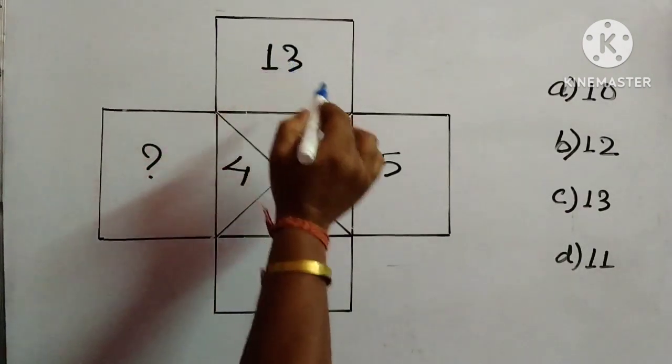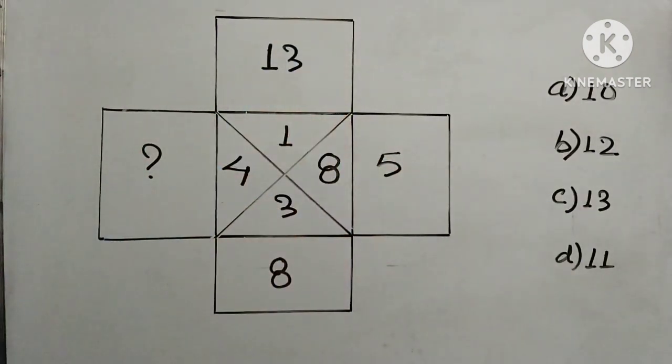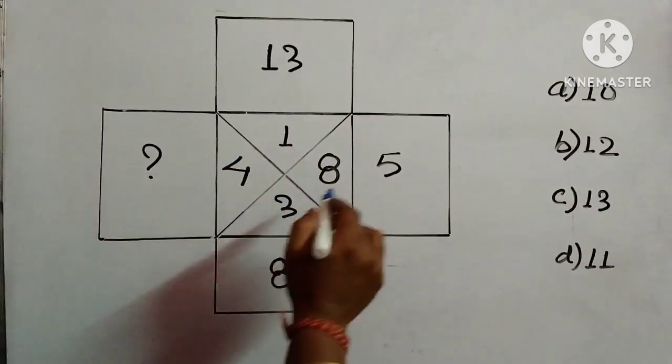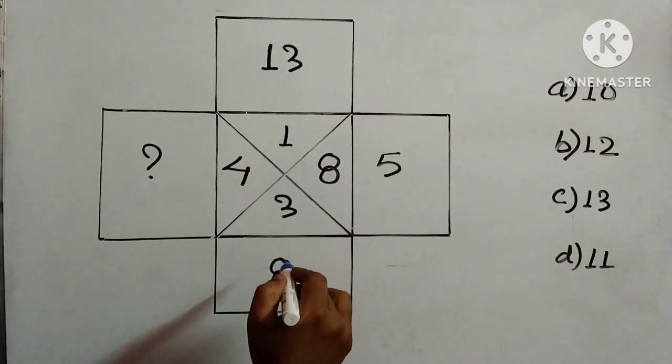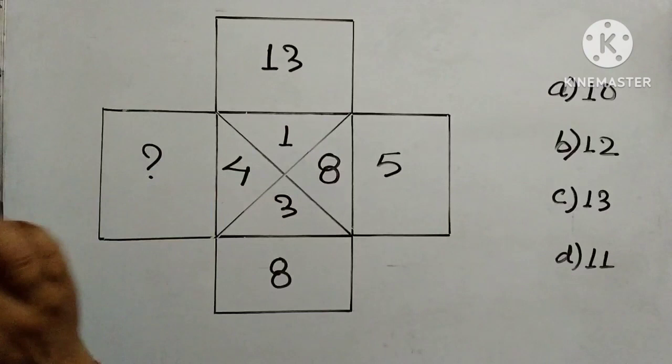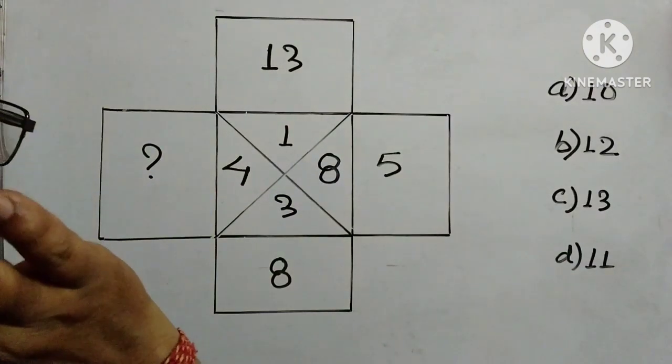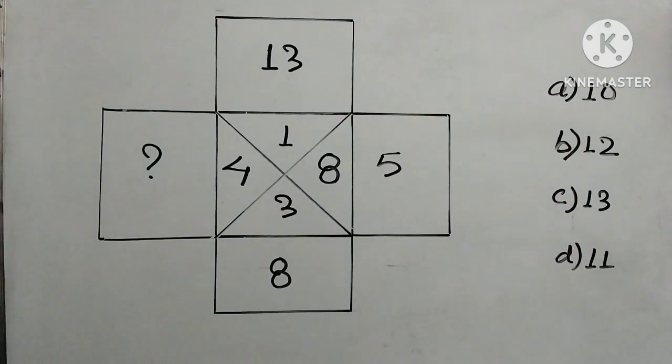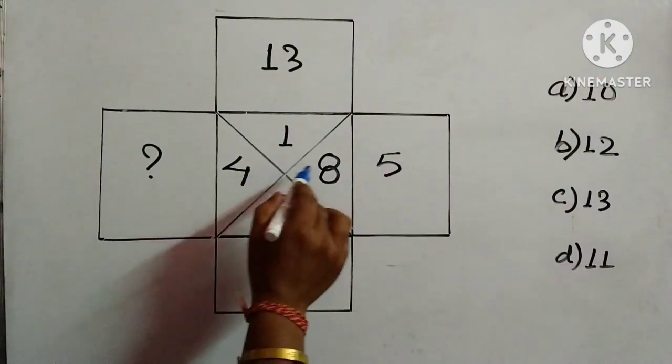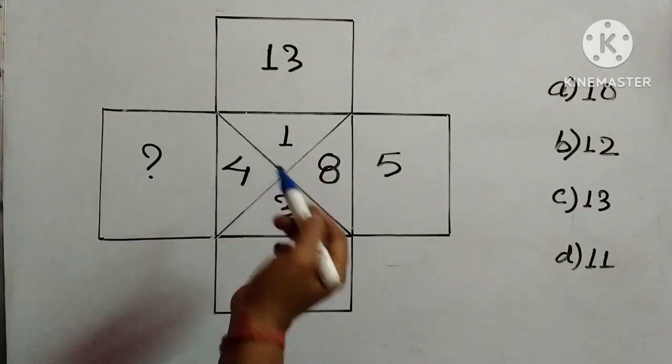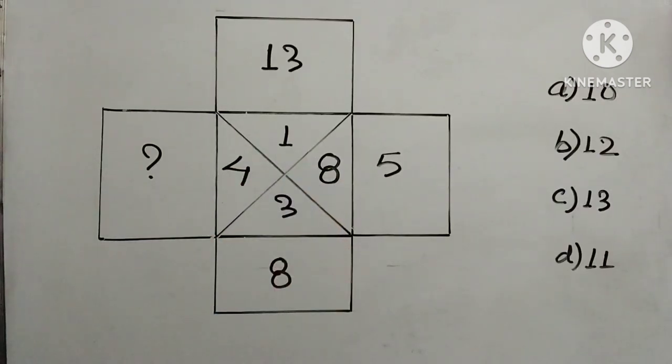If we will add 13 plus 5, this is 18. So 18 is nowhere. Now 5 plus 8 is 13, 13 is given over here, but in this way we cannot proceed. And if we will add this one also, 4 plus 8 is 12, 3 plus 1 is 4. So we have to try out in a different way.